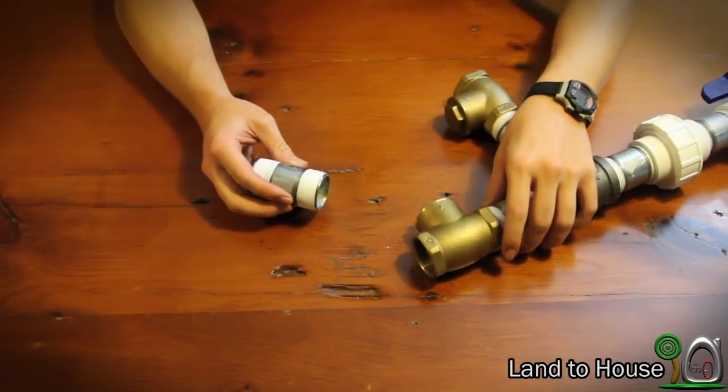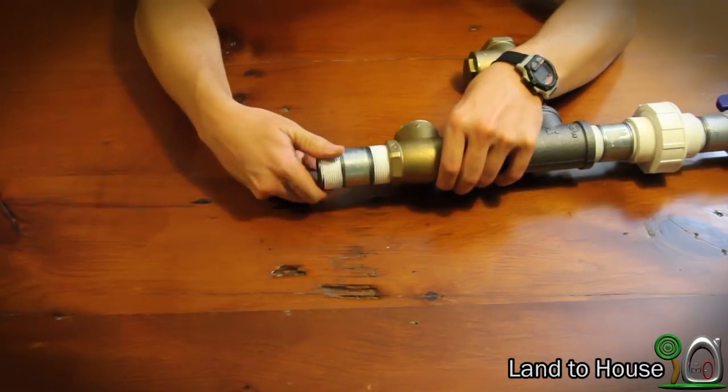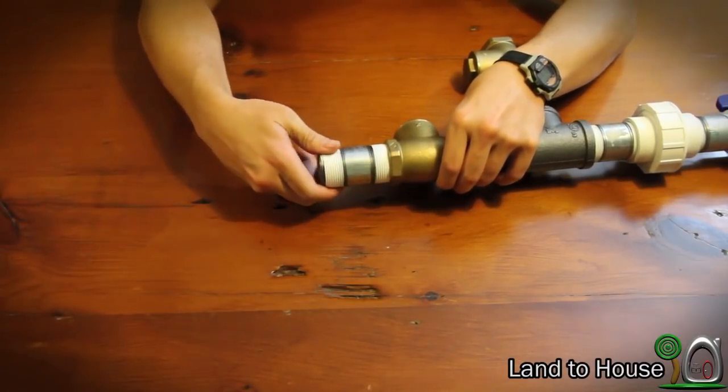Step 10. Take another one and a quarter pipe nipple and screw into this check valve.